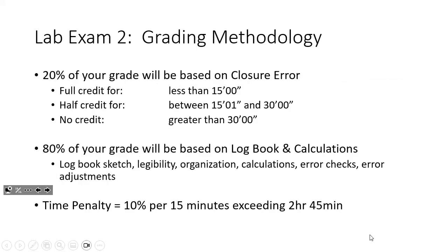In terms of your grade, there's going to be a component based on closure error — based on the angles, not the distances. If your closure is less than 15 minutes, you get full credit. If it's between 15 and 30 minutes, you get half credit. If it's over 30 minutes, you get no credit. This should be feasible — most groups in last week's lab were getting closures of like 40 seconds or 20 seconds. So 15 minutes or less is very achievable. The rest of the grade is based on the logbook and the calculations.